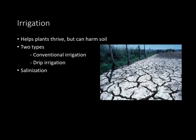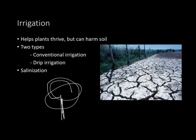Let's look at irrigation. Irrigation helps plants thrive, but if it's not done properly it can also really harm soil. There are two main types. Conventional irrigation is the old school form — a sprinkler system that shoots water all over the place, which is really inefficient. More recently, we have drip irrigation, which consists of little pipes that go to individual plants and give them the exact amount of water they need, instead of just shooting water in the air.